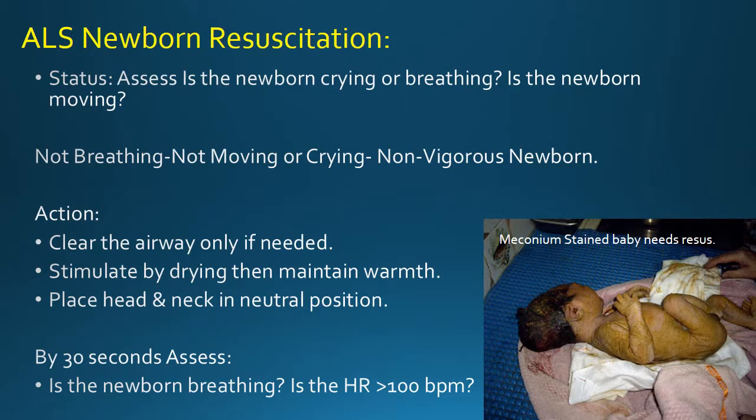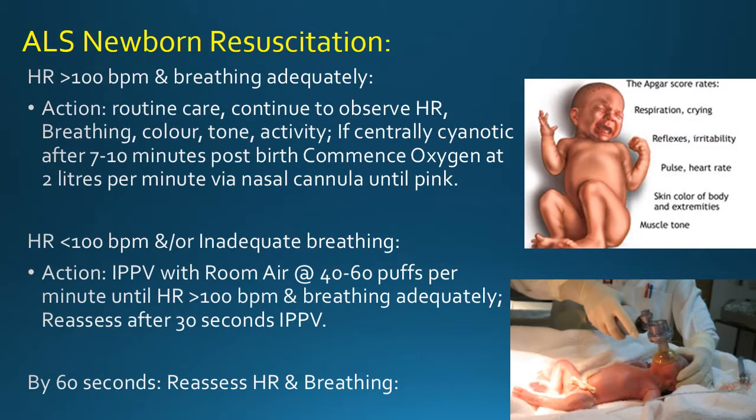Status: assess if the newborn is crying or breathing, is the newborn moving? Not breathing, not moving or crying — non-vigorous newborn. Action: clear the airway only if needed, stimulate by drying then maintain warmth, place head and neck in neutral position. By 30 seconds: assess if the newborn is breathing, is the heart rate greater than 100 beats per minute? If heart rate greater than 100 and breathing adequately: routine care, continue to observe heart rate, breathing, colour, tone, activity. If centrally cyanotic after 7 to 10 minutes post birth, commence oxygen at 2 litres per minute via nasal cannula until pink. If heart rate less than 100 and/or inadequate breathing: IPPV with room air at 40 to 60 puffs per minute until heart rate greater than 100 and breathing adequately. Reassess after 30 seconds IPPV. By 60 seconds reassess heart rate and breathing.